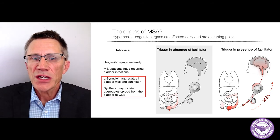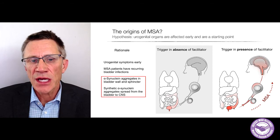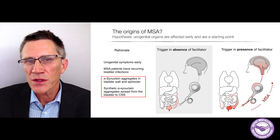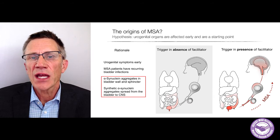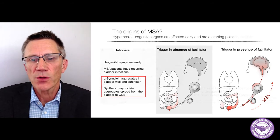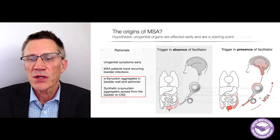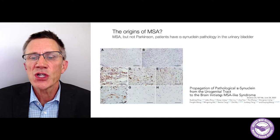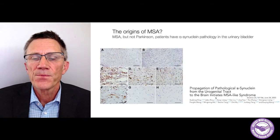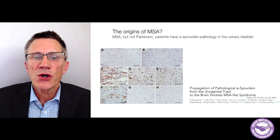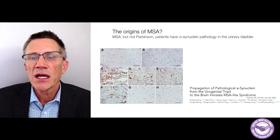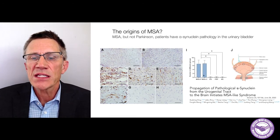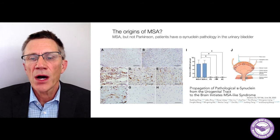A study published on June 26th from a Chinese group showed synuclein aggregates in the bladder wall and the sphincter are very prevalent, and that you can have spread of aggregates in a mouse model. Here are pictures showing synuclein aggregates in the bladder wall and the urinary sphincter, comparing people with MSA-P and MSA-C with people affected by Parkinson's.